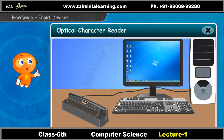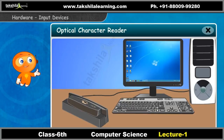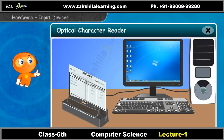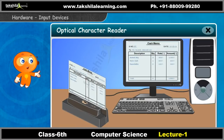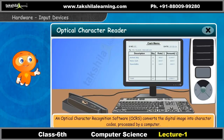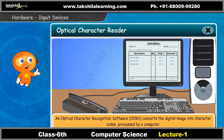Next, let us look at an optical character reader. An optical character reader scans normal printed or handwritten text and produces a digital image of the text. An optical character recognition software, or OCRS, converts the digital image into character codes or editable text processed by a computer.